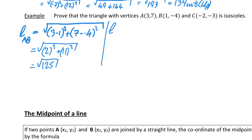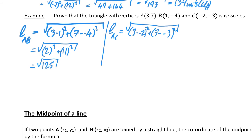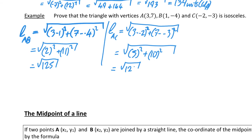Next we'll do length AC. A to C gives the square root of (3 minus minus 2) squared plus (7 minus minus 3) squared. Tidying up: 3 plus 2 is 5 squared, and 7 plus 3 is 10 squared, giving 25 plus 100, so the square root of 125.